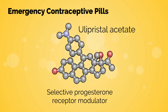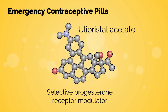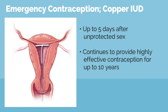The emergency contraceptive pill ulipristal acetate, approved for up to 5 days after sex, is a selective progesterone receptor modulator. It binds but does not activate progesterone receptors, thereby interfering with dominant follicle recruitment and ovulation even after the LH surge. The copper IUD can also be used as highly effective emergency contraception up to 5 days after unprotected sex, with the advantage of continuing to provide highly effective contraception for up to 10 years.